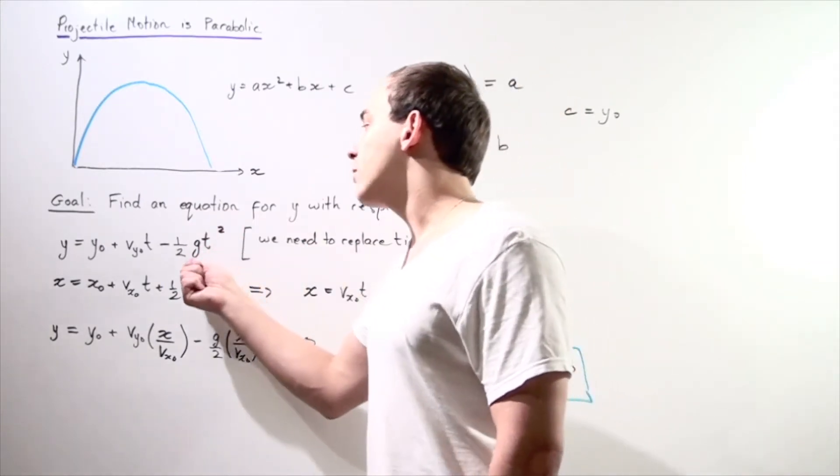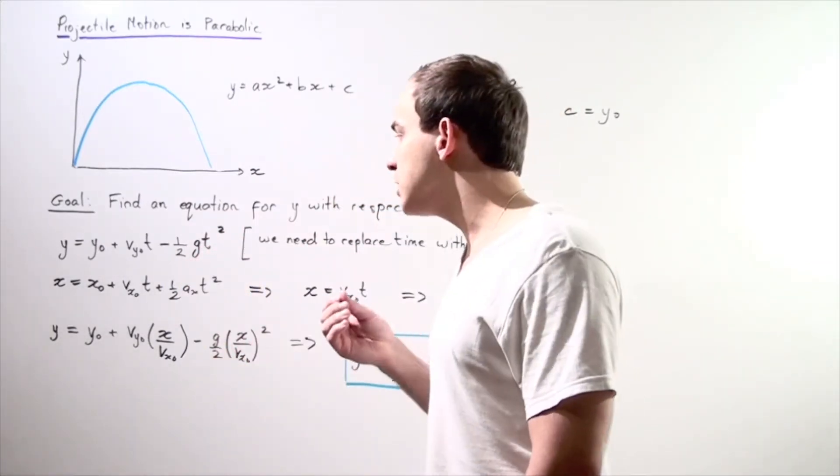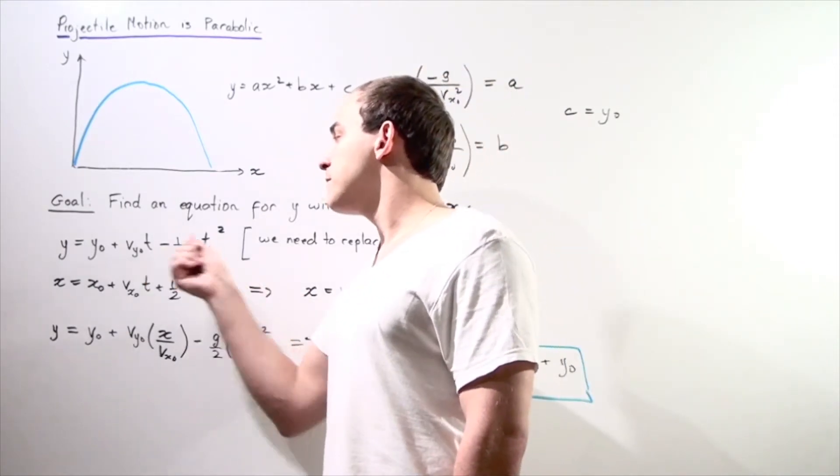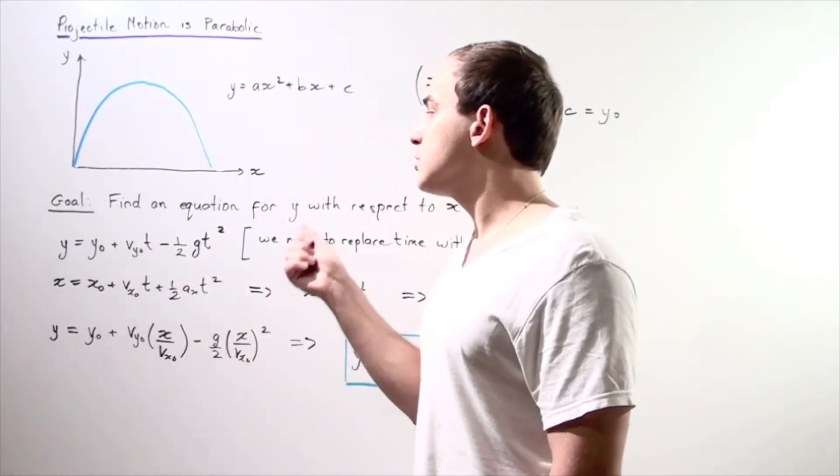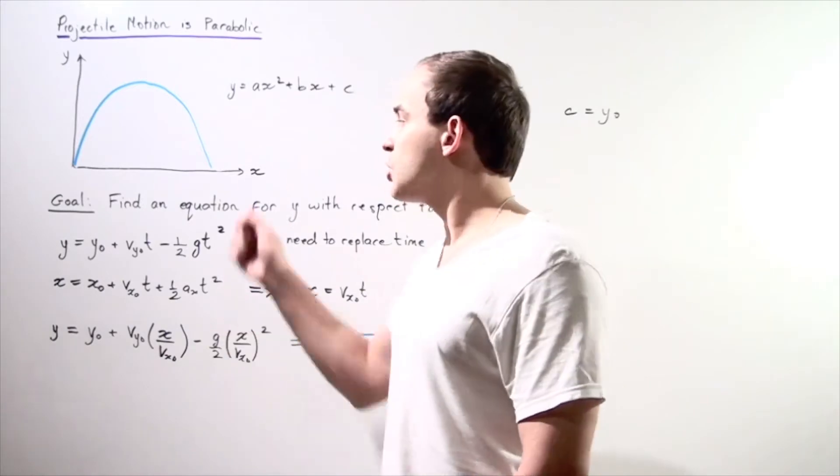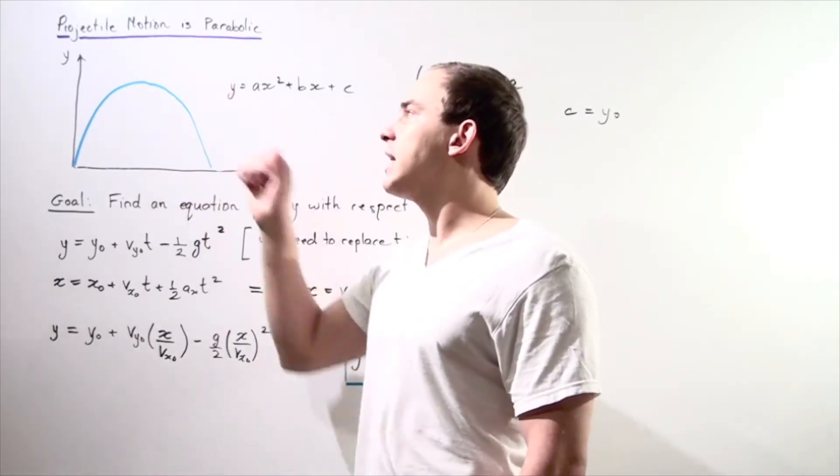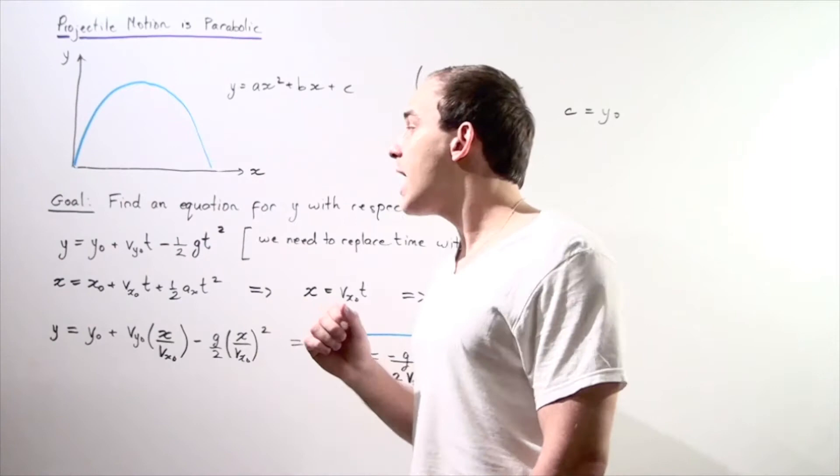So our g is simply our gravitational acceleration, and this negative comes from the fact that our g is assumed to be negative because going downward is negative, while going upward along the y-axis is positive.